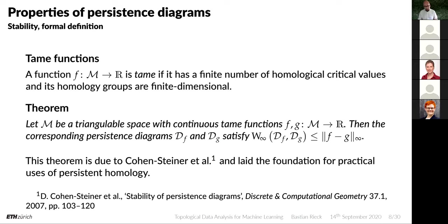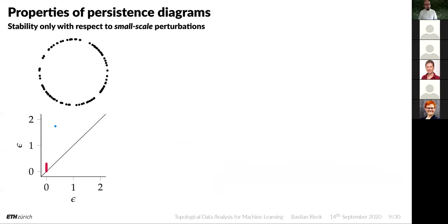This theorem, due to Cohen-Steiner and colleagues from 2007, laid the foundation for all practical uses of persistent homology. There are also other approaches: Gromov-Hausdorff stability, Lipschitz stability based on the Wasserstein distance, and so on. However, this stability only pertains to small-scale perturbations — it assumes the Hausdorff distance between the spaces is still somewhat bounded.